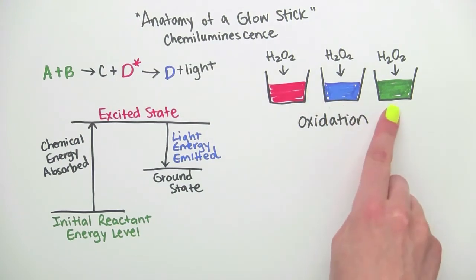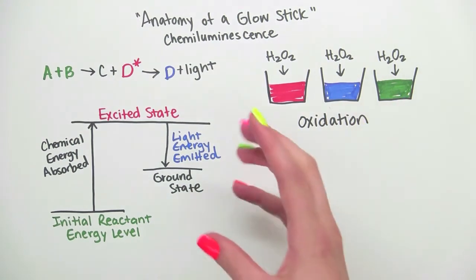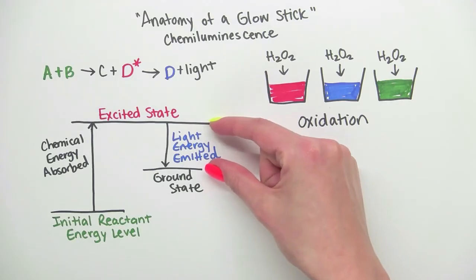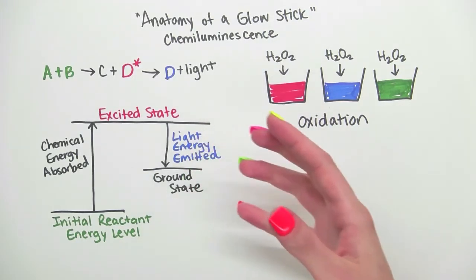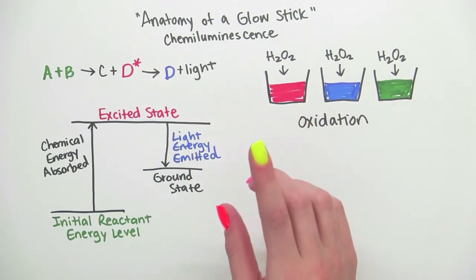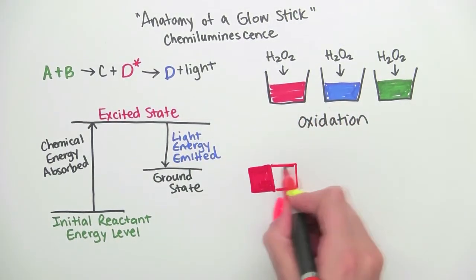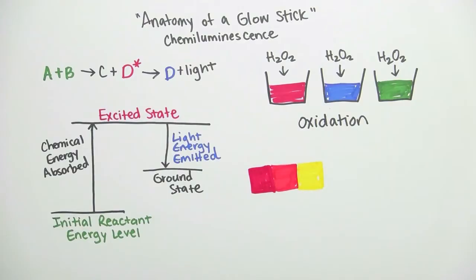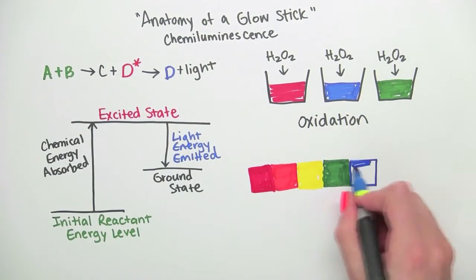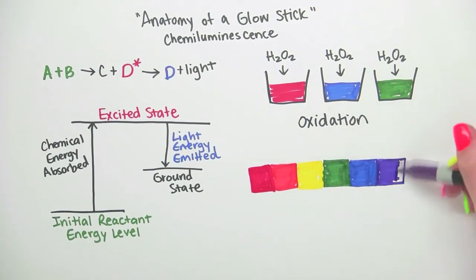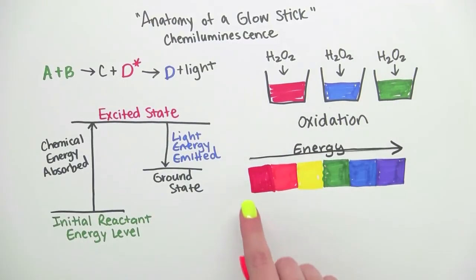So why did each of these chemicals glow a different color? Well, it's because they each emitted a different amount of energy and energy equals color. So let's think of it in terms of a rainbow spectrum.